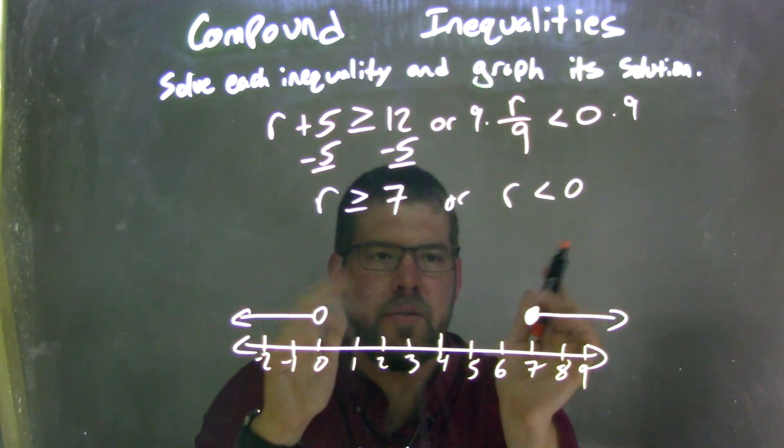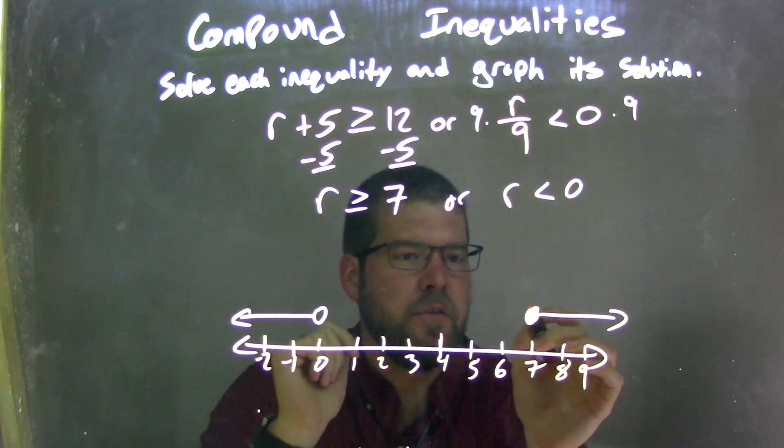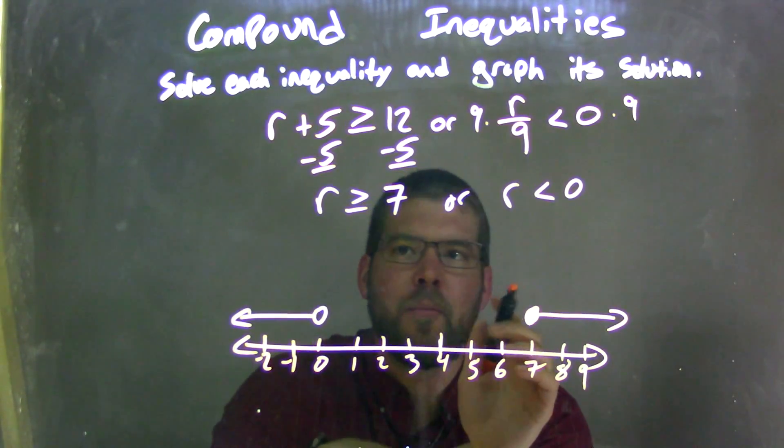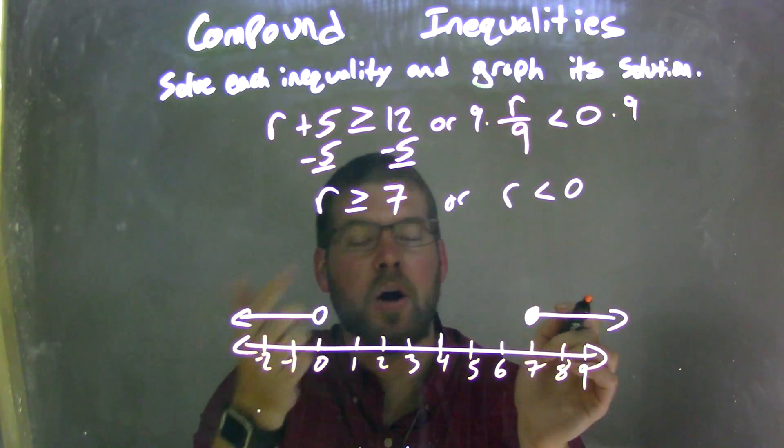I now graph each one individually. r was greater than or equal to 7, so I put a closed circle at 7 and an arrow to the right because r was greater than 7.